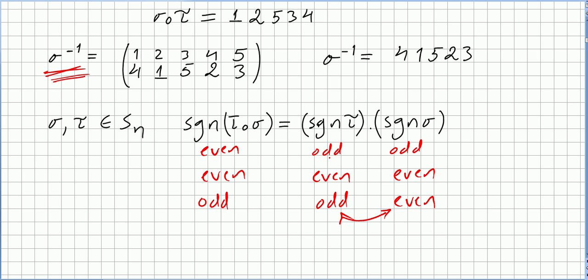Because if this one is odd, the sign of it will be minus one. This one the sign will be minus one. Minus times minus will be one. So the sign of the composition will be one. One times one is one. And here we'll have minus one times one or one times minus one. This will be minus one. So the composition will be sign minus one.